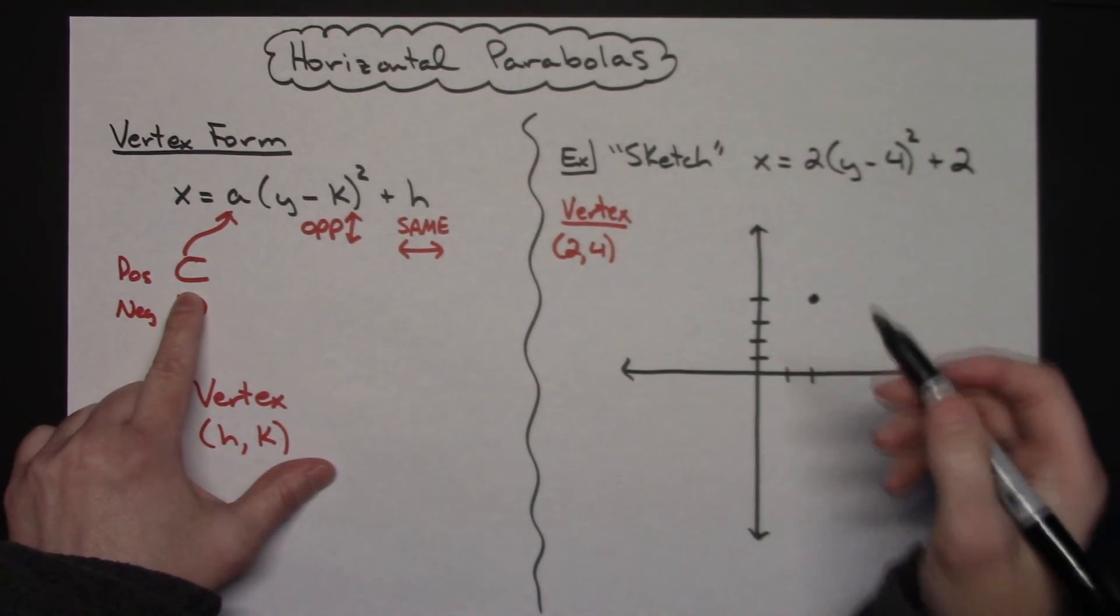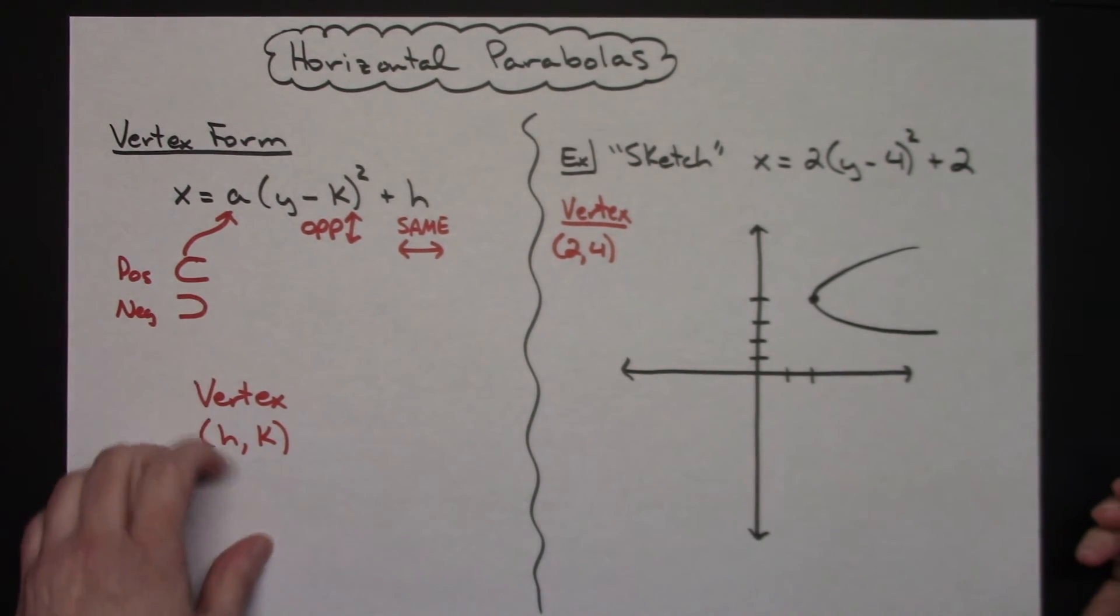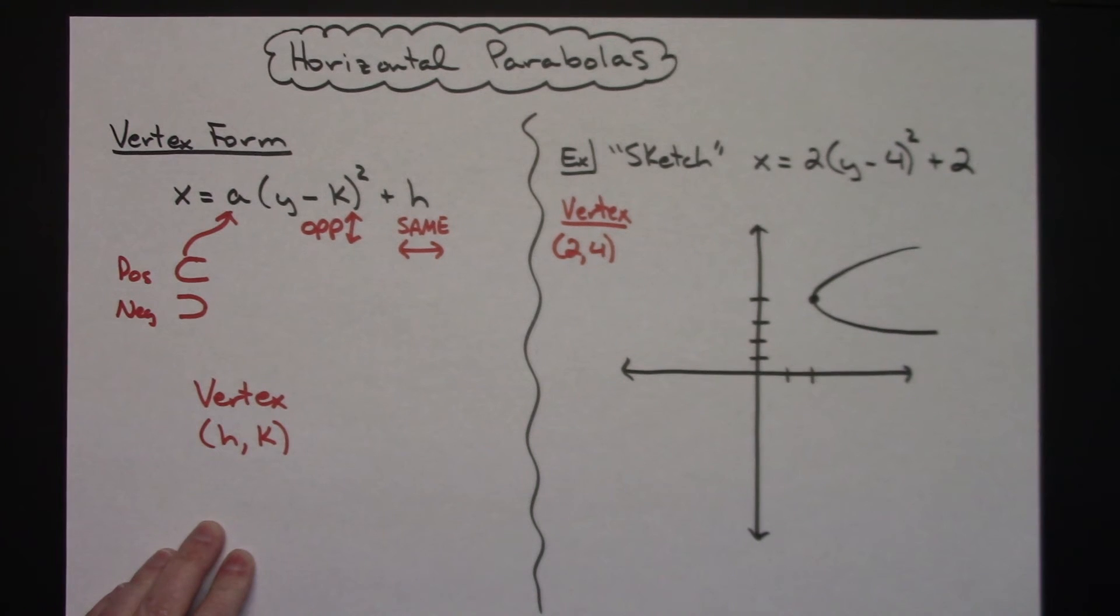And if all I am doing is a rough sketch and I know it opens to the right, then I can just do something like that. Not an accurate graph, I don't know how wide or how narrow that is, I'm just doing a really rough sketch here. But that's just a real quick look at your horizontal parabolas. Thanks for watching.